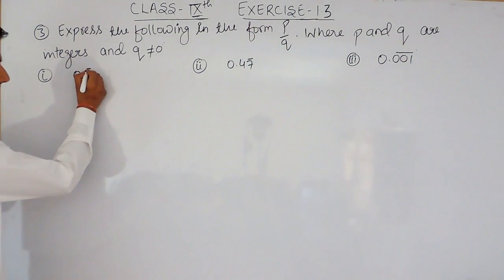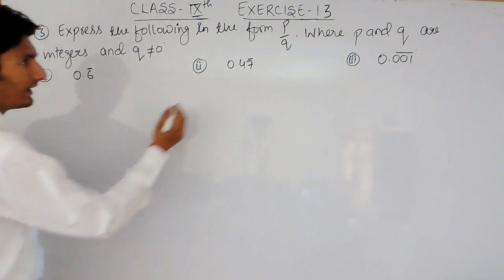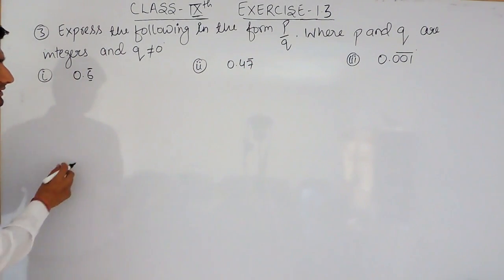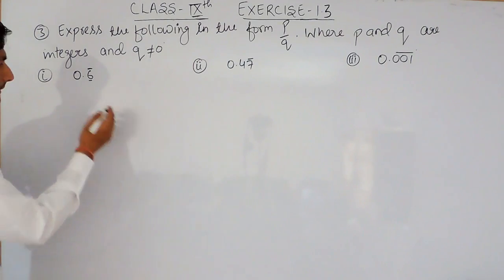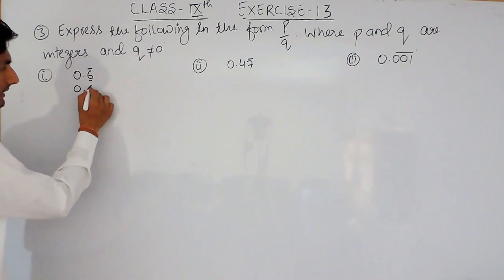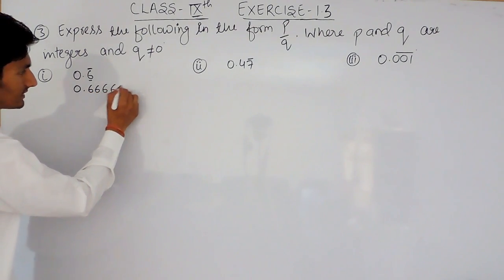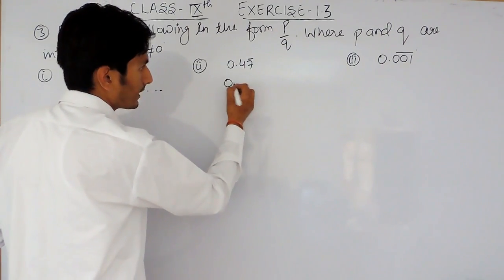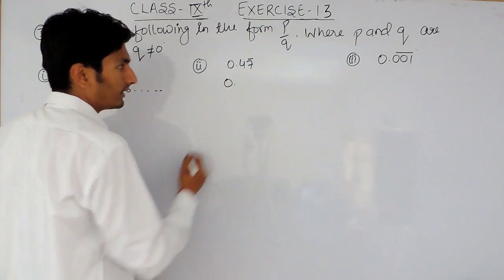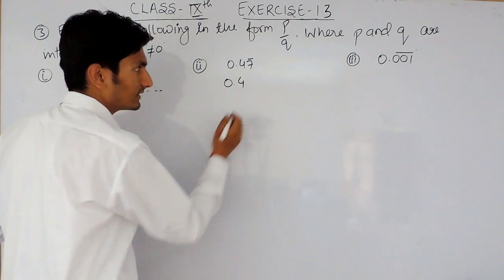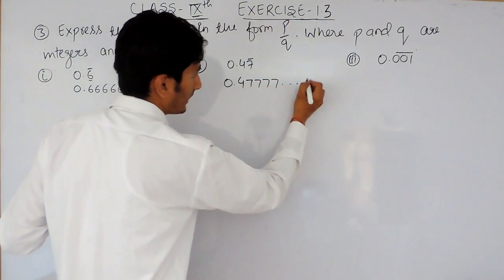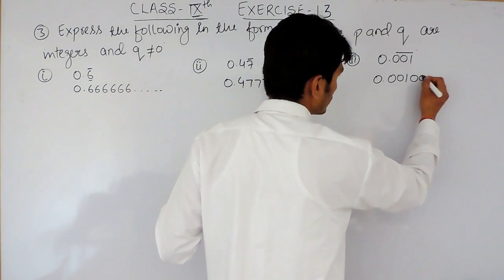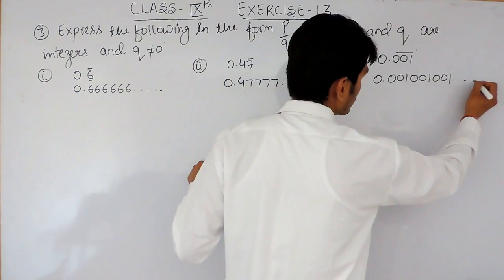So this is 0.6 bar — the bar means the number below it will repeat itself, so 0.6 bar means 0.6666... and so on. Similarly, 0.47 bar means 4 will remain as it is but 7 will repeat itself. And for the third expression, it will be 0.001001001... and so on.